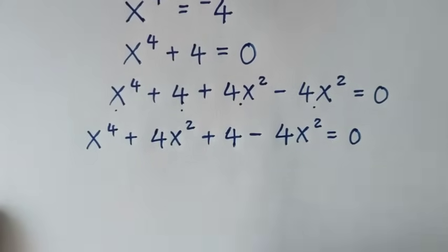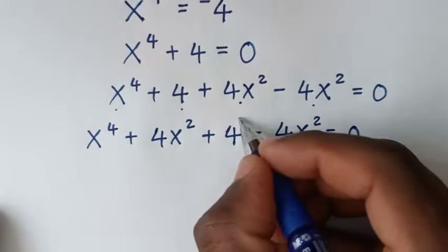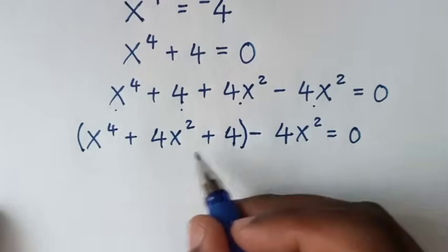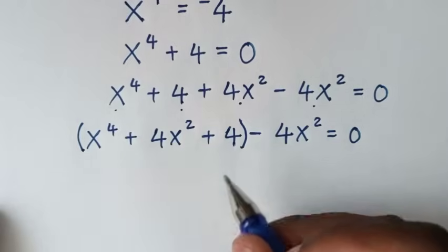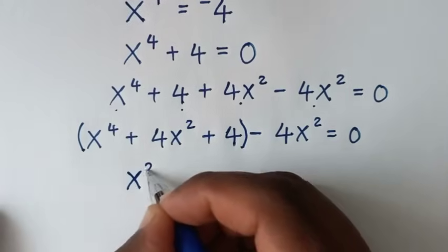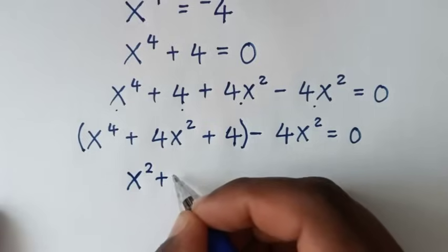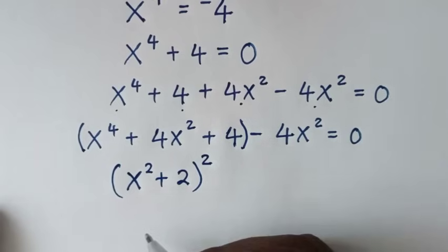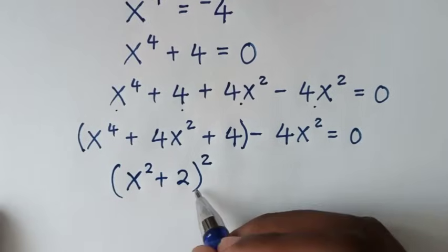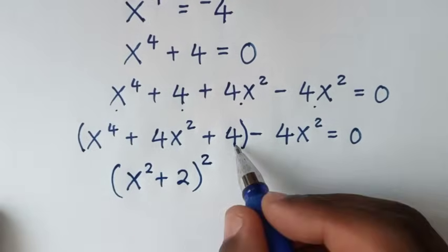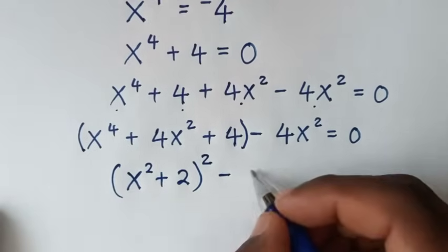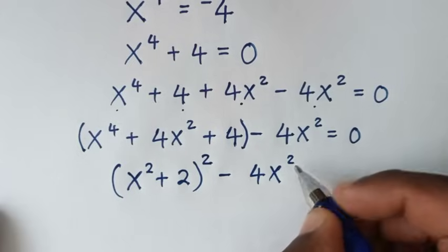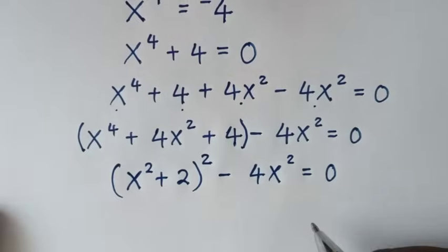Then from here, this part is the expansion of a perfect square, which is (x² + 2)². So the expansion of this gives us that term, then minus 4x² is equal to 0.